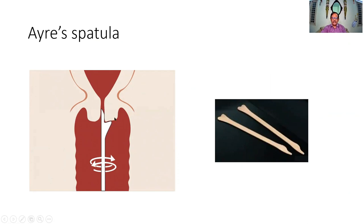Sampling is required at the region of the ectocervix and endocervix. Look at the shape of this spatula — it is shaped so the gynecologist can get a sample from the ecto-endocervical junction, which is mandatory because the tumor can become malignant. There can be metaplasia, dysplasia, etc. at this particular site, and sampling is required.